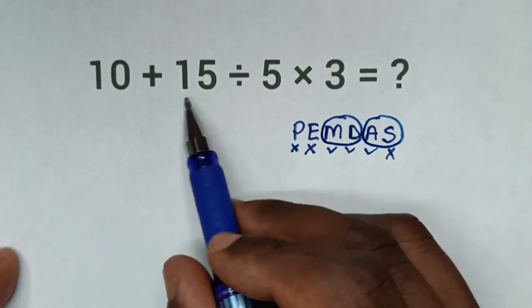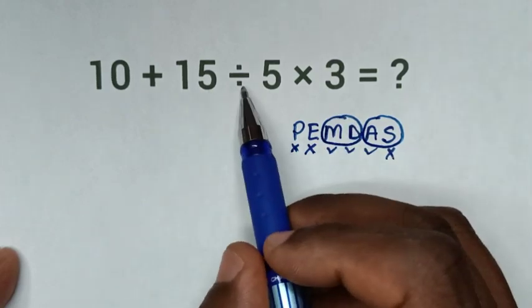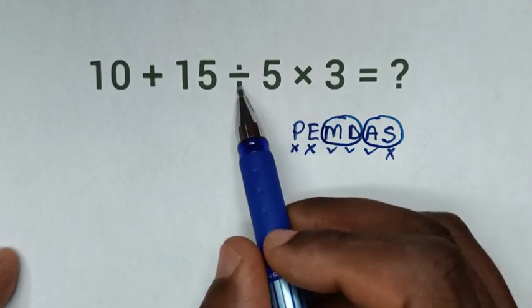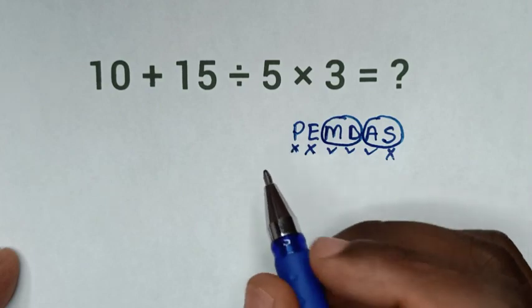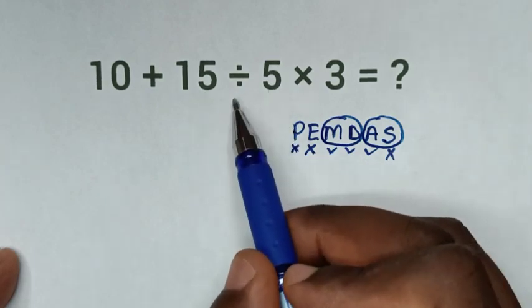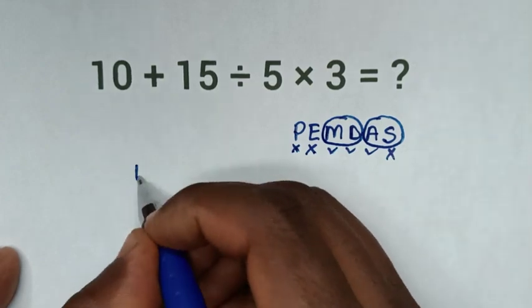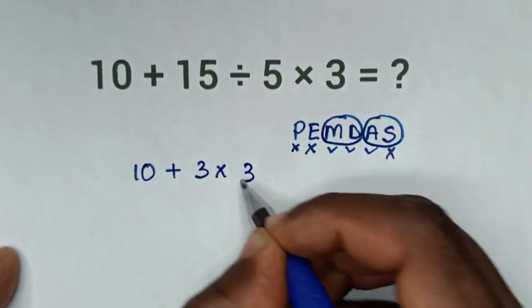According to what starts first in our problem, division starts first, then multiplication. So from this division, 15 divided by 5 is 3. It will be 10 plus 3 times 3.